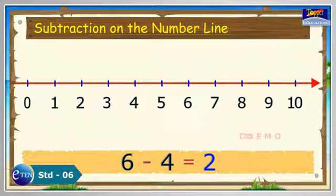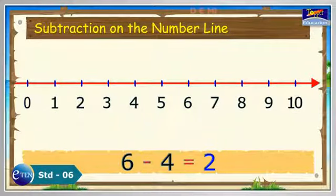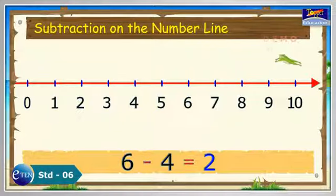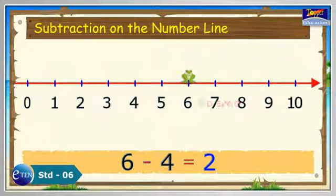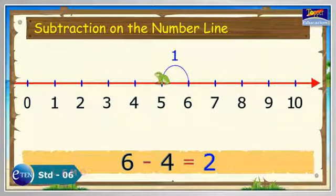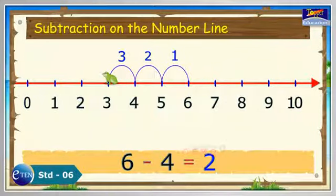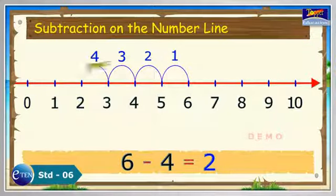To subtract on the number line, a frog will start from 6. Since we need to subtract 4 from number 6, the frog will make 4 jumps to the left: from 6 to 5, 5 to 4, 4 to 3, and 3 to 2.